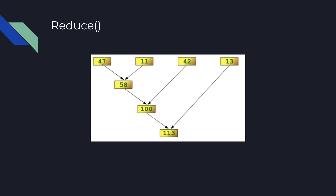Then on the next execution, the first argument will be 58 and the second argument will be the third element of the original array, which is 42. The calculated sum is 100, and on the third execution of the reduce callback, 100 and 13 are passed as first and second arguments, and the calculated sum is 113.